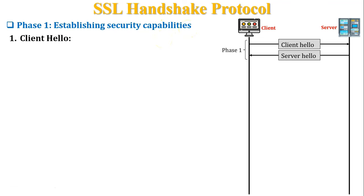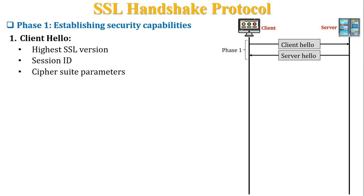In the client hello message, the first parameter is the highest SSL version, indicating which SSL version the client can support. The next parameter is session ID, which defines the session. The third parameter is cipher suite parameters, containing the list of all cryptographic algorithms which the client system supports. The last parameter is list of compression methods the client supports. These parameters are shared by the client with the server in the client hello request.